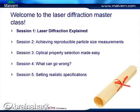The other sessions in this series will look at how to develop your measurement method. In the second one, we'll look at achieving a reproducible particle size measurement, looking at the different parameters that you need to control to get a reproducible result. In session three, we'll look at optical property selection and different methods you can use to choose the optical properties and ensure you've got the appropriate optical properties for your material.